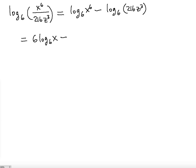So now we're going to use the product rule. The product rule for the expansion here is going to be the sum of the logs of the individual inputs. So we have two inputs being multiplied: 216 is one input, z to the third is the second input.